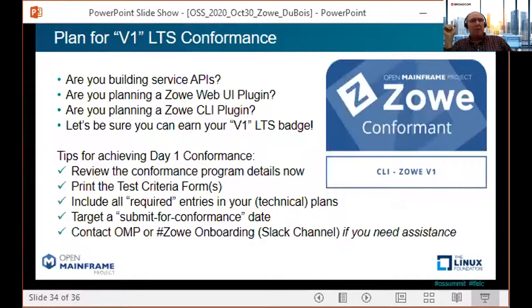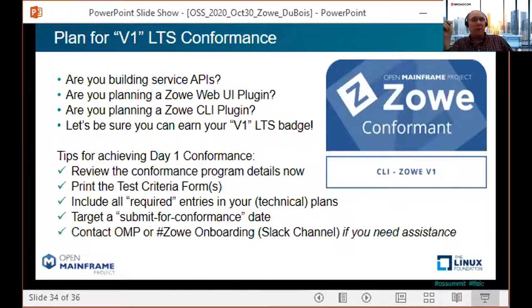Any extension can apply, including new applications as well as existing ones — even those that were 2019 conformant were able to apply for V1 conformance. All you do is review the terms, complete the evaluation, and submit your form. The application is then reviewed by the Open Mainframe Project. Once approved, your badge will be displayed with all of the other conformance badges. If you're thinking about building a CLI plugin, a service API, or a web UI application, just be sure to consider the Zoe conformance program. If you need any help, reach out through the OMP Slack using the Zoe onboarding channel.